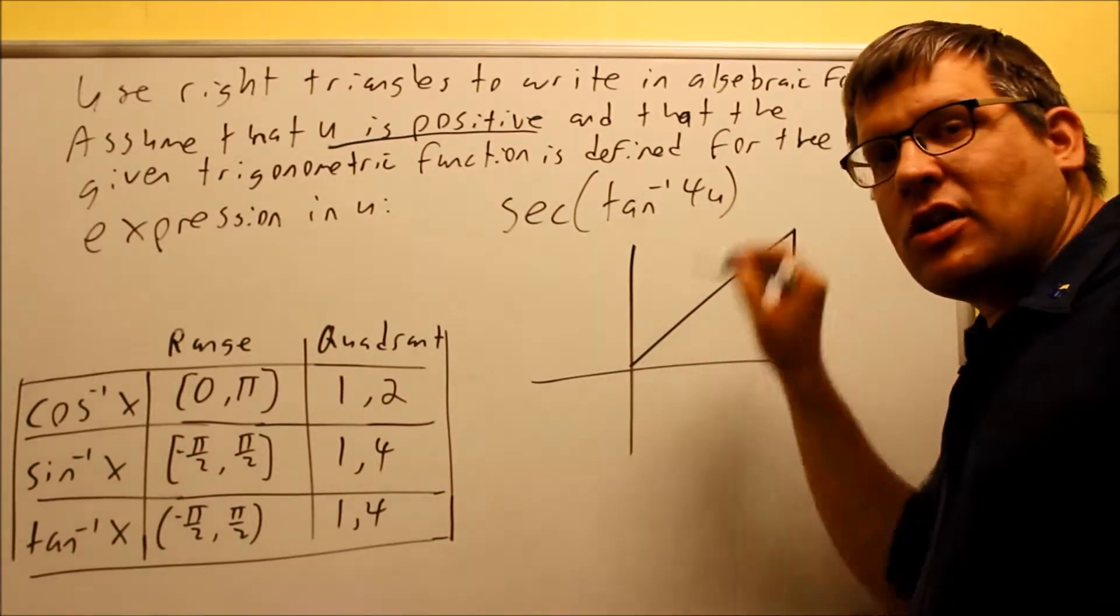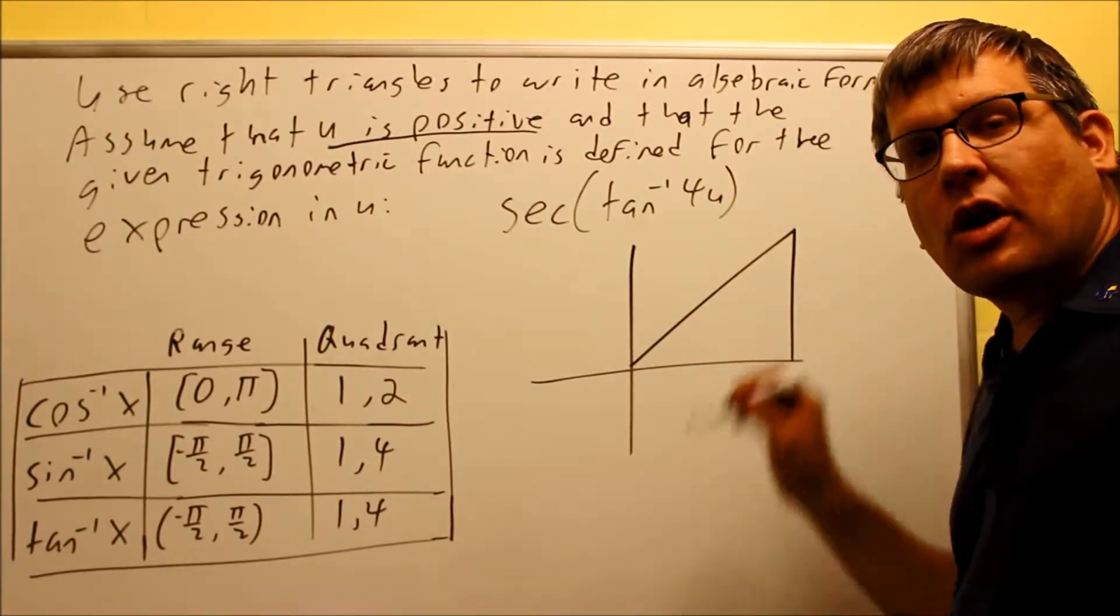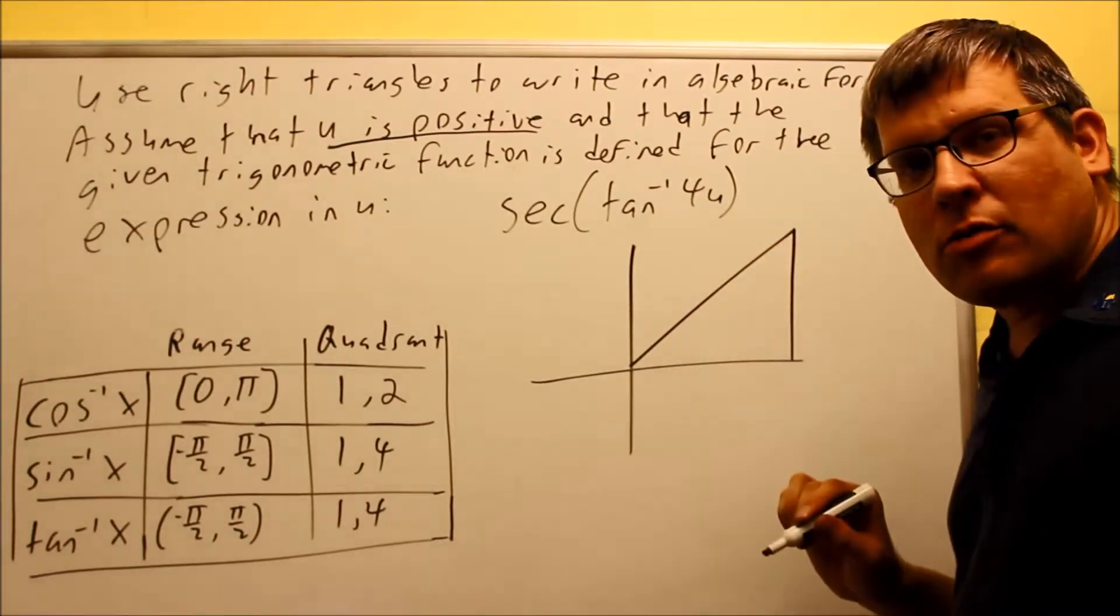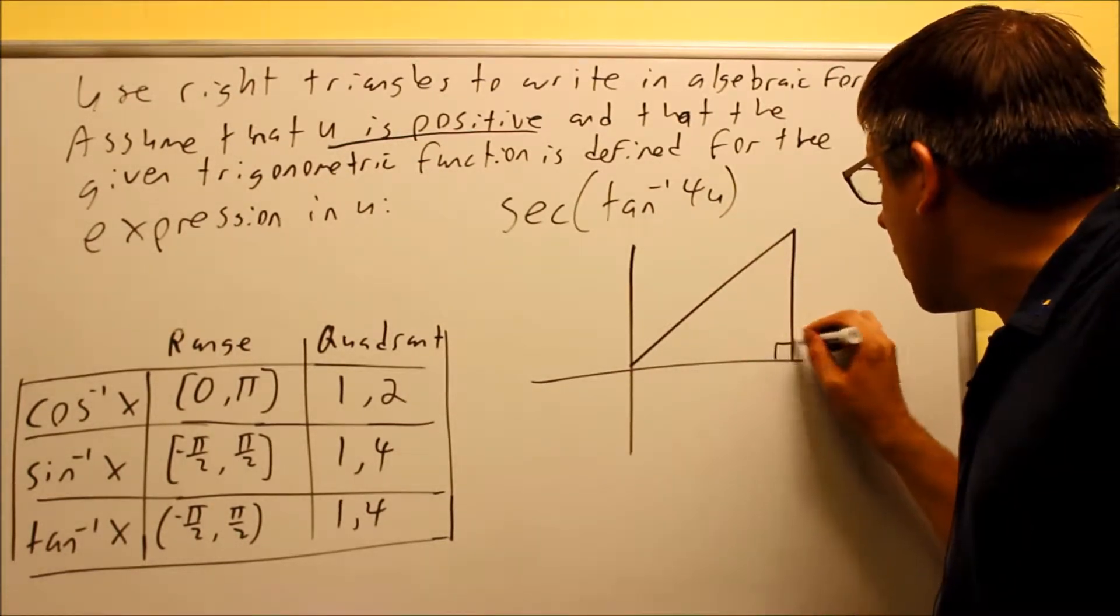So if I have a choice to draw the triangle in either quadrant number one or four, if this is positive that means I need to choose the first quadrant because my All Students Take Calculus says that everything, all of them have to be positive in the first quadrant, so I'm going to draw it here.